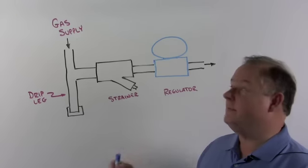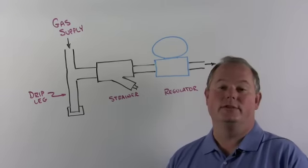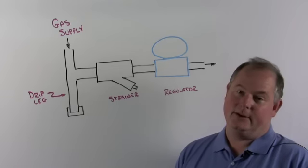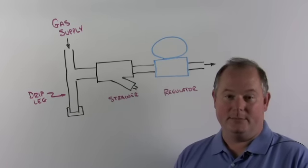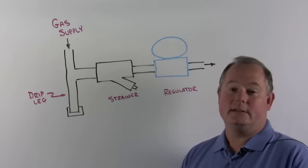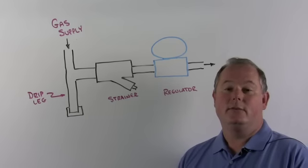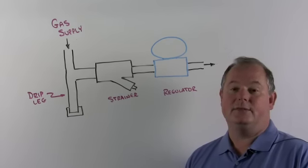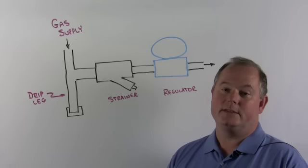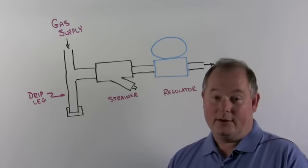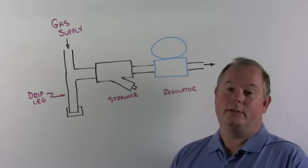Why do we need that? Because the gas supply has more than just gas in it. The gas is dirty. It's got pipe threads, pipe dope, little pieces of rust, all kinds of debris. When that debris gets in that gas regulator and sits between the soft seat and the hard seat, it's going to leak through.